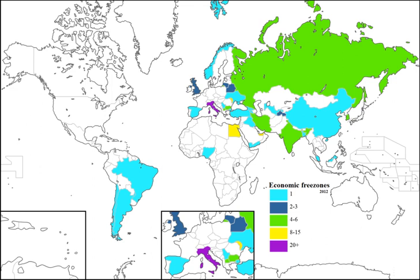Albania: Spital, Koplik, Vlorë. Argentina: General Pico Free Zone, Provincia de Tierra del Fuego, Antártida y Islas del Atlántico Sur. Armenia: Gyumri. Bangladesh: Bangladesh Export Processing Zone Authority. Belarus: Brest FEZ, Mogilev FEZ, Vitebsk FEZ.